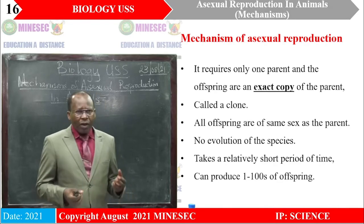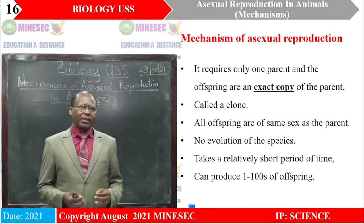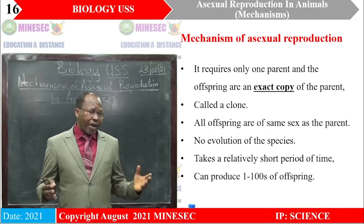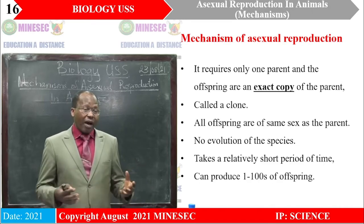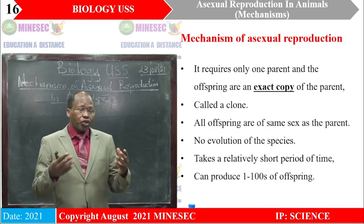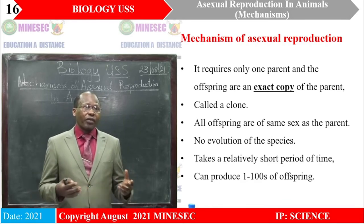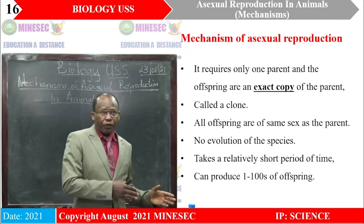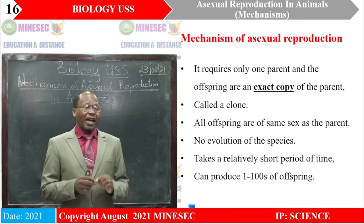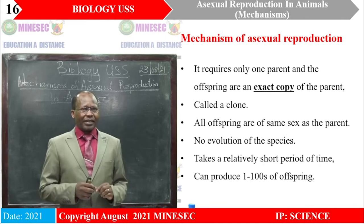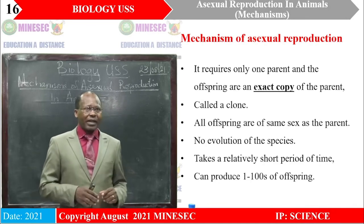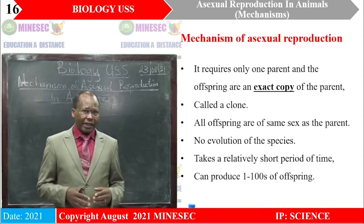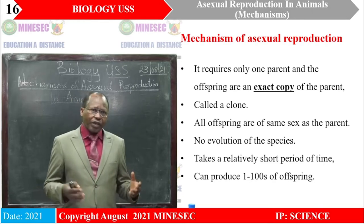We have seen that asexual reproduction requires only one parent, like we saw with the hydra, and the offspring produced is the exact copy of the parent. When many such offspring are produced, we call that group a clone, because they are all genetically the same. Usually, these offspring are always of the same sex, because there was no fusion of gametes — if they had been formed from a female organism, all would be females. In this situation, there is no evolution of species, because evolution would involve a change of genetic material. This also takes a relatively short period of time for many offspring to be produced.